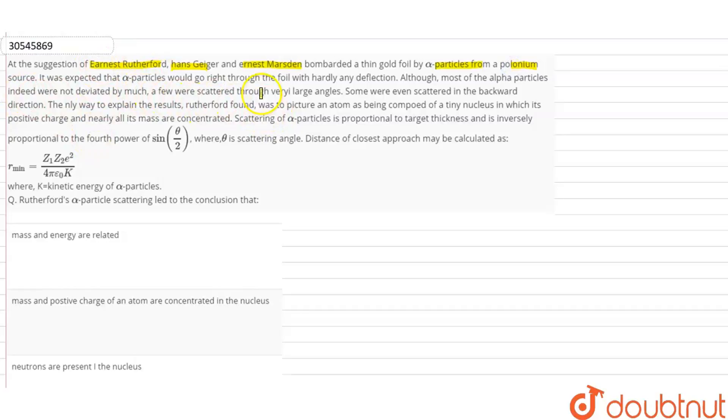Although most of the alpha particles indeed were not deviated by much, a few were scattered through very large angles. Some were even scattered in the backward direction. The only way to explain the results Rutherford found was to picture an atom as being composed of a tiny nucleus in which its positive charge and nearly all its mass are concentrated.